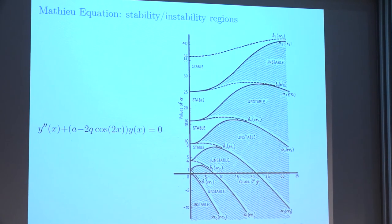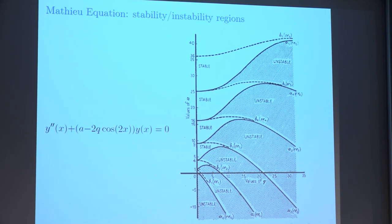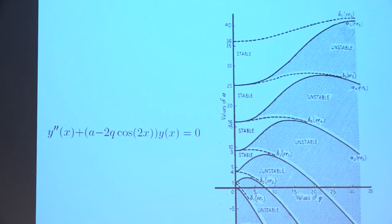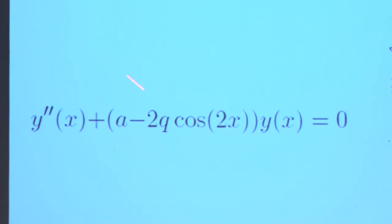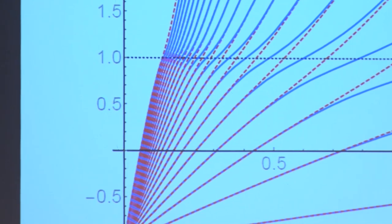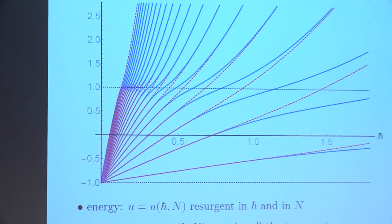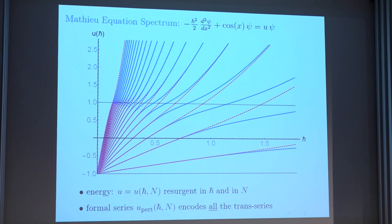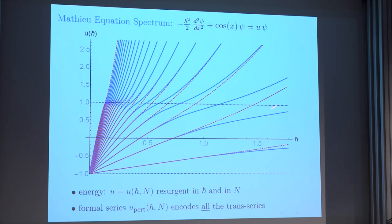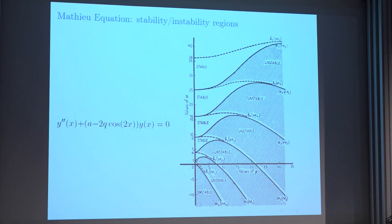Let's start with the Mathieu equation, a quantum mechanical model. The classical model has regions of stability and instability as the parameters Q and A vary. I can rewrite this in quantum mechanics language, dividing by Q and calling it one over h-bar squared, and A over Q like an energy — so it becomes a Schrödinger equation with a cosine potential. The spectrum shows bands and gaps corresponding to stability and instability regions. There's a monodromy parameter N from boundary conditions, labelling the bands 0, 1, 2, 3, etc.